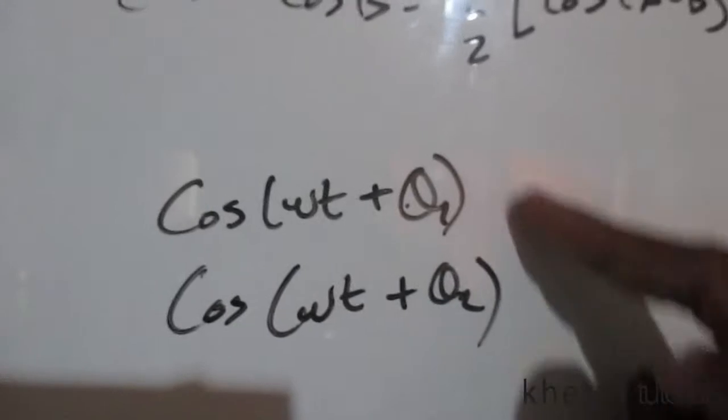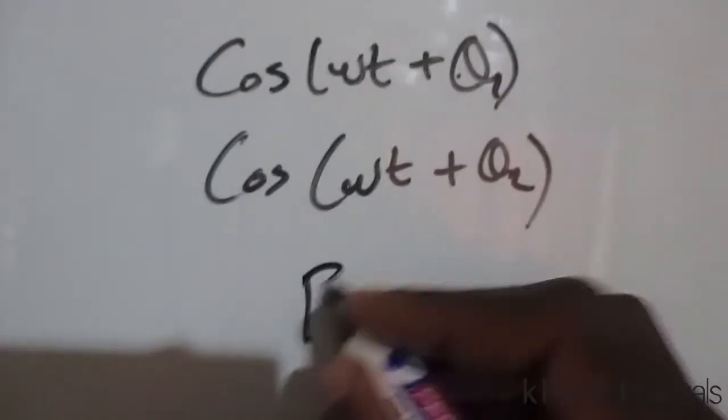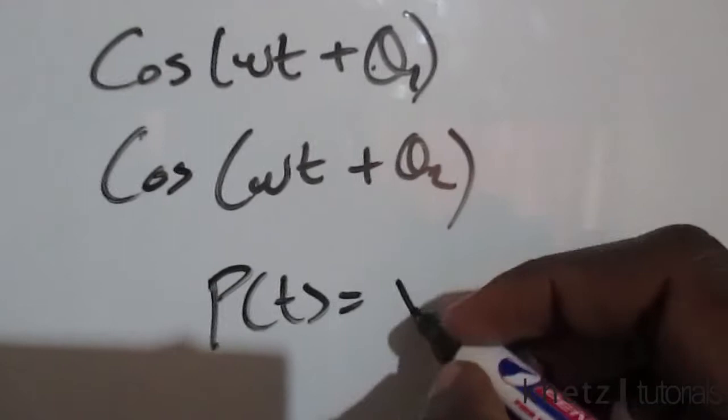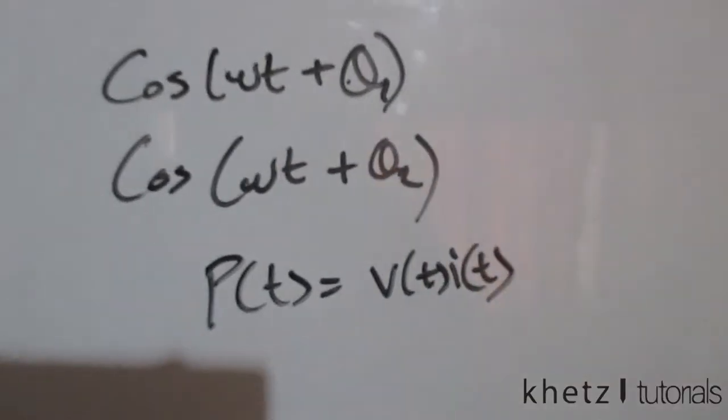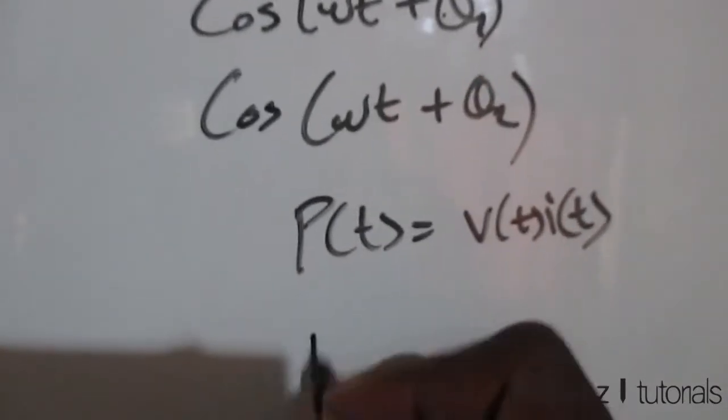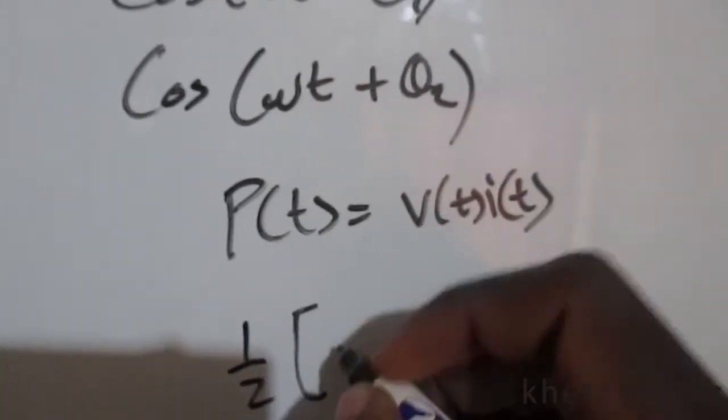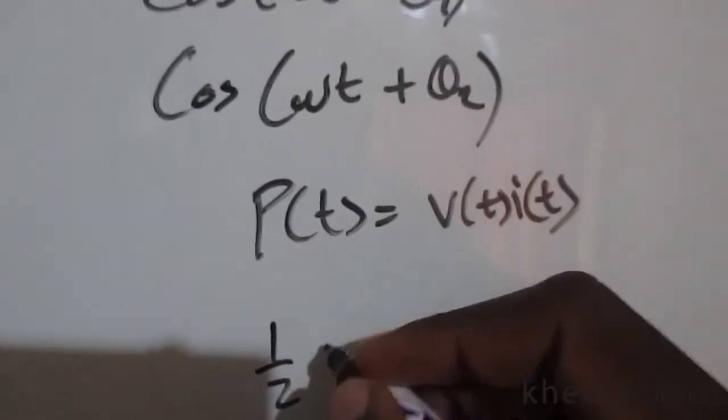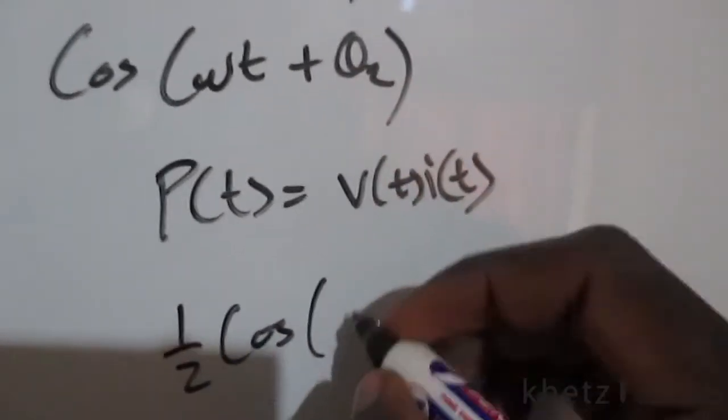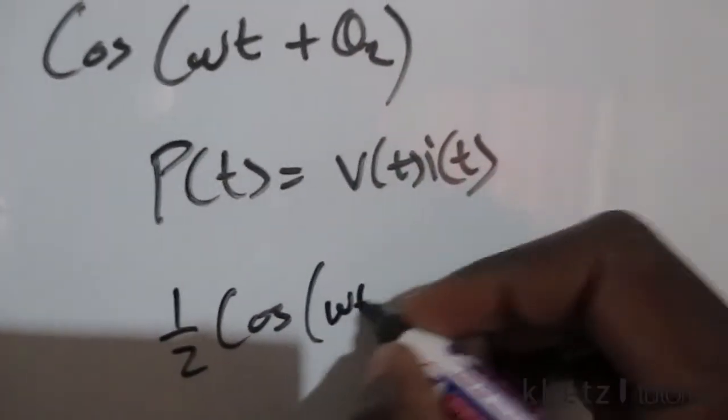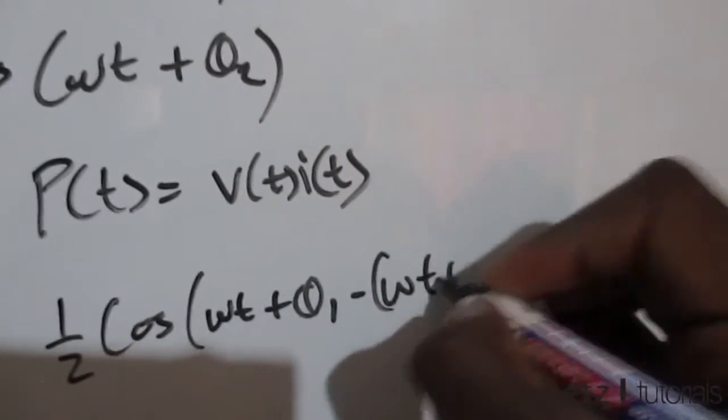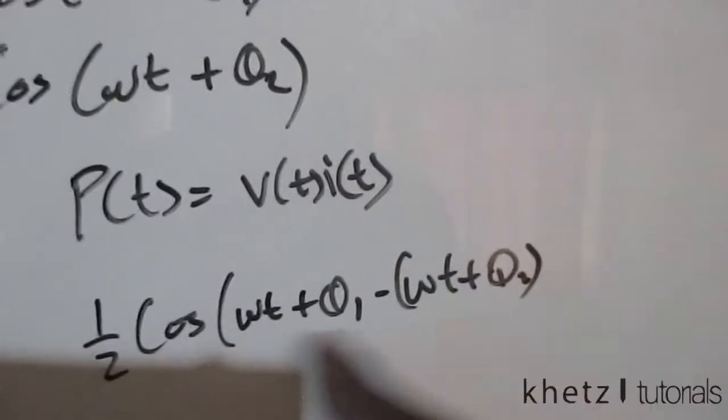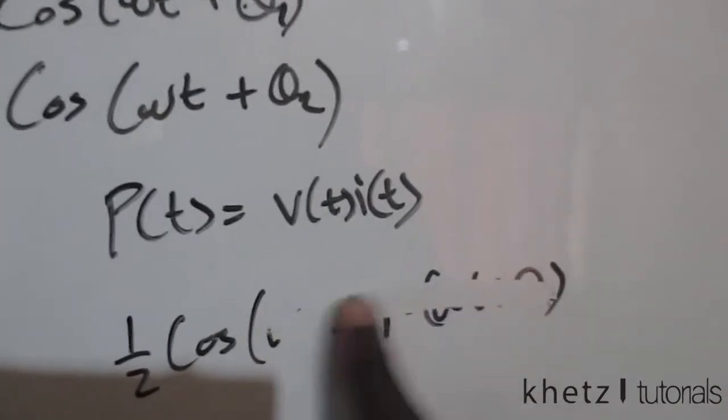So if you were to multiply these two because instantaneous power is just simply multiplying the two. If you were to multiply these two you basically say half of cosine then omega t plus theta one.